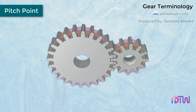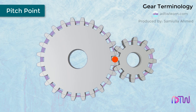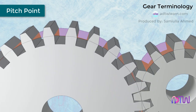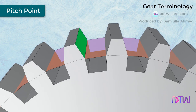Pitch Point. When the two gears are in contact, the common point of both pitch circles of meshing gears is called the pitch point. The surface of the tooth above the pitch circle is called the face of the tooth. The surface of the tooth below the pitch circle is called the flank of the tooth.